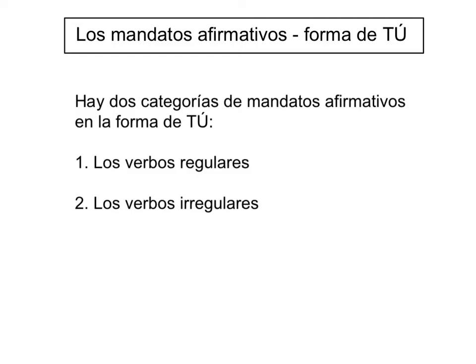En esta lección vamos a revisar las conjugaciones de los mandatos afirmativos en la forma de tú. Cuando decimos mandatos afirmativos, estamos diciendo affirmative commands. This is saying how to tell someone to do something as opposed to not do something — for example, eat the sandwich as opposed to don't eat the sandwich, or walk the dog as opposed to don't walk the dog. So that's what we mean by mandatos afirmativos.